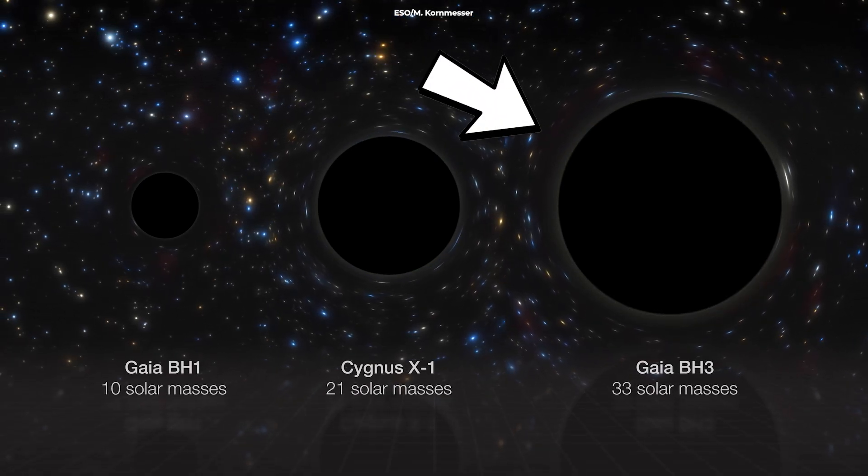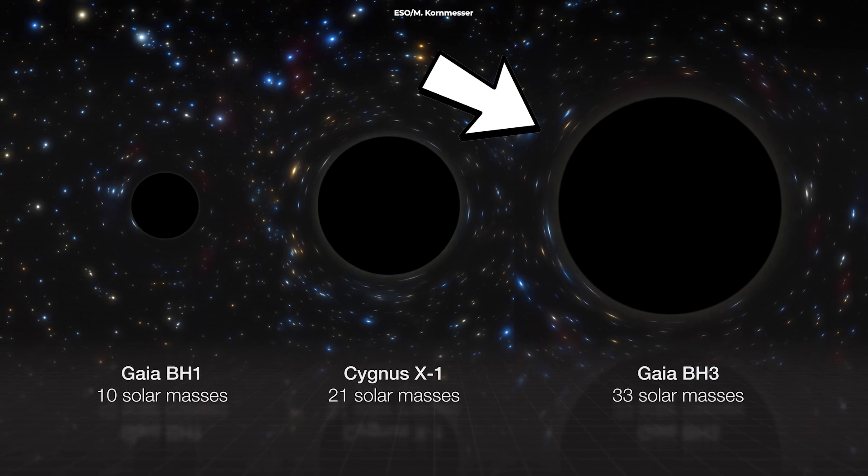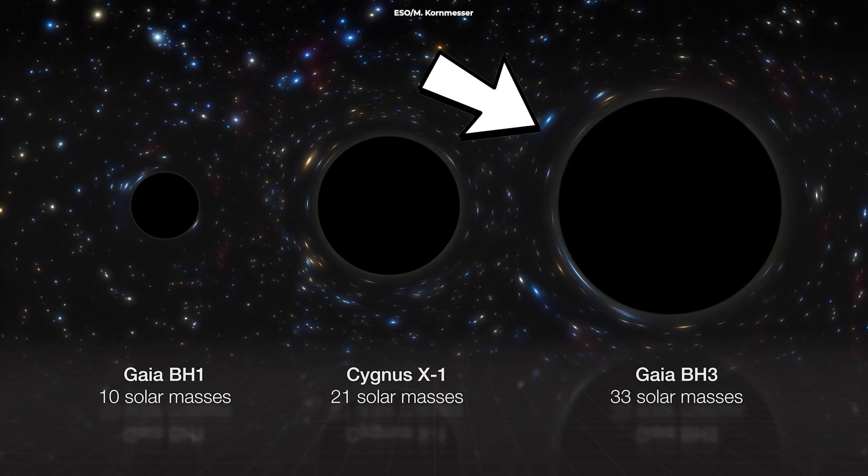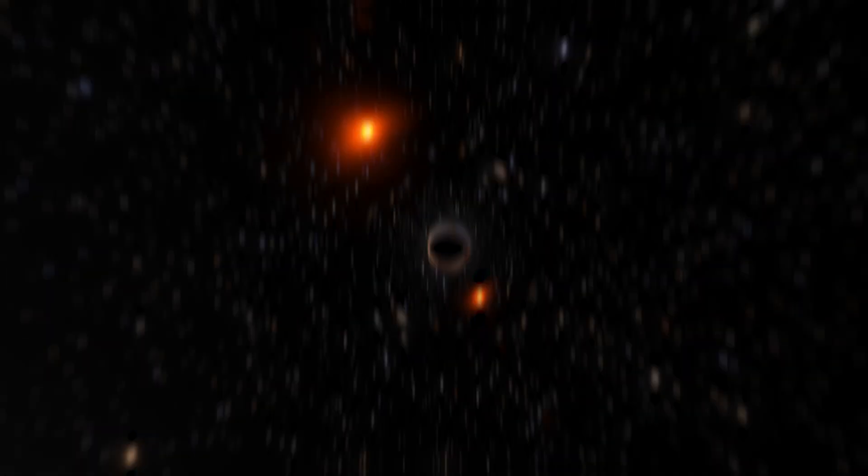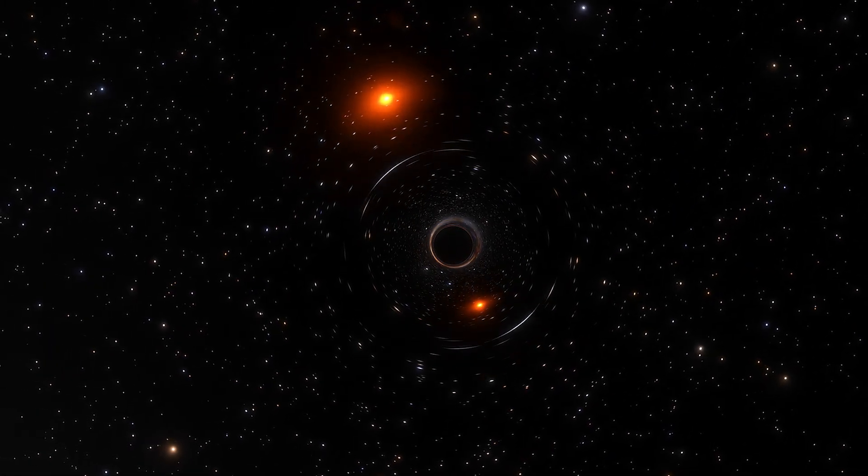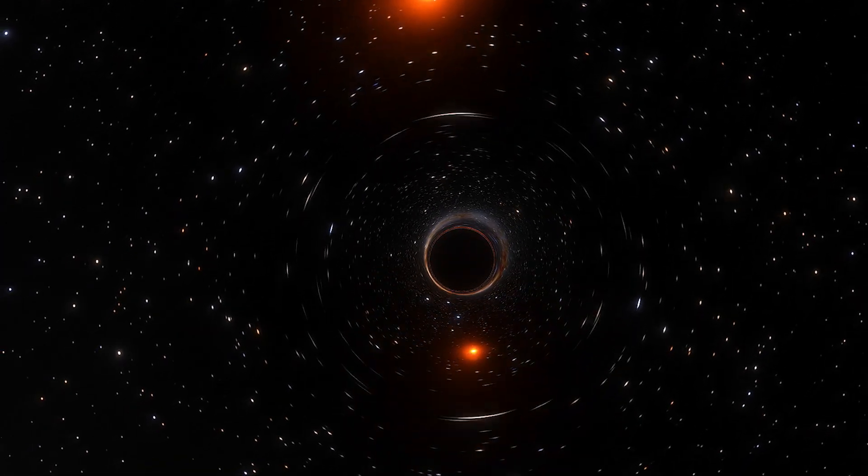Scientists just found the most massive stellar black hole ever found in our galaxy, 33 times more massive than our sun. What's more exciting is that the black hole is one of the nearest to us, and it's apparently been created by a type of star that shouldn't form black holes. This is a game-changer.